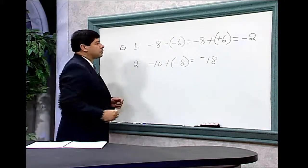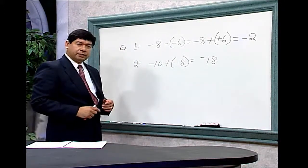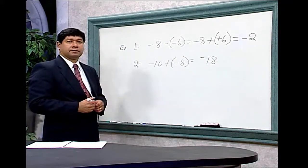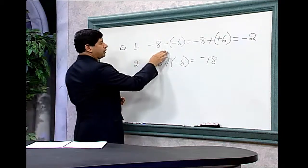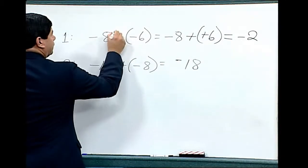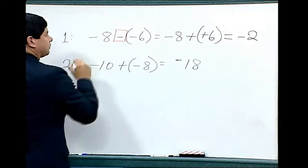The addition or subtraction symbol in the problem tells you what operation, what process to do in solving the problem. In the first problem we have negative eight minus negative six. Here's our operation symbol—we're subtracting.